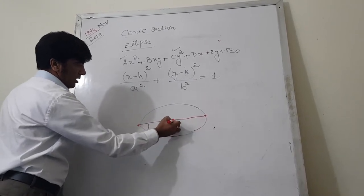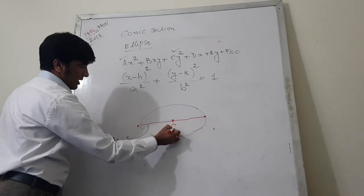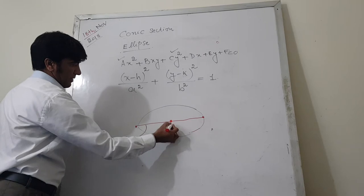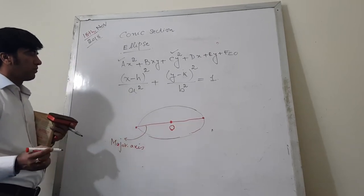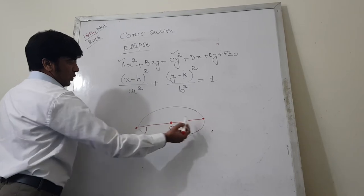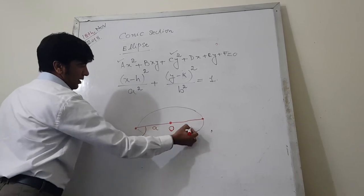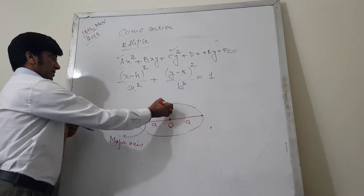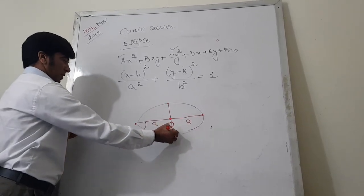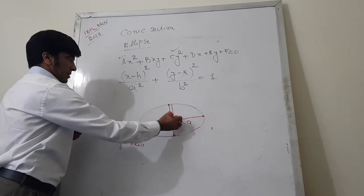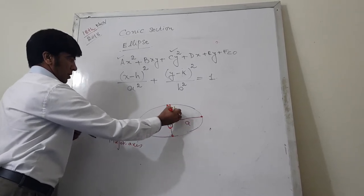And this point halfway between is called center. Let's say this is center O. And the length of this major axis is 2a - a is this one and a is this one. And minor axis, this length is b and this length is b.